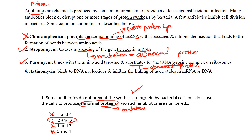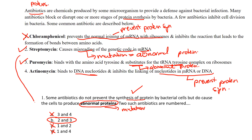Now if we take a look at number four: it binds to DNA and inhibits the linking of nucleotides in messenger RNA. If it's binding to DNA, that has nothing to do with protein synthesis in the way we're looking for. And if you can't actually link messenger RNA together, you're not going to make a protein — that's going to prevent protein synthesis, because if you can't get the code right, there's no way to start stringing amino acids together. So two and three are the ones that produce abnormal proteins — that's what we're looking for.